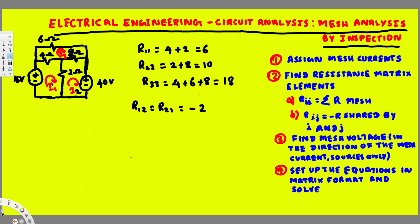For I1 and I3, the four-ohm resistor is shared, so R13 and R31 equal negative four. For I2 and I3, the eight-ohm resistor is shared by both, so R23 and R32 equal negative eight.